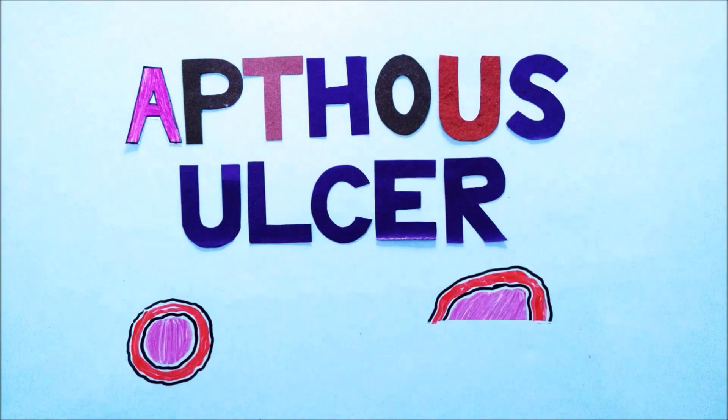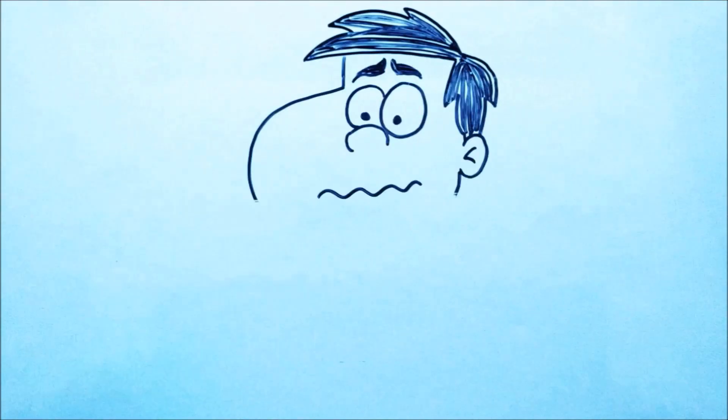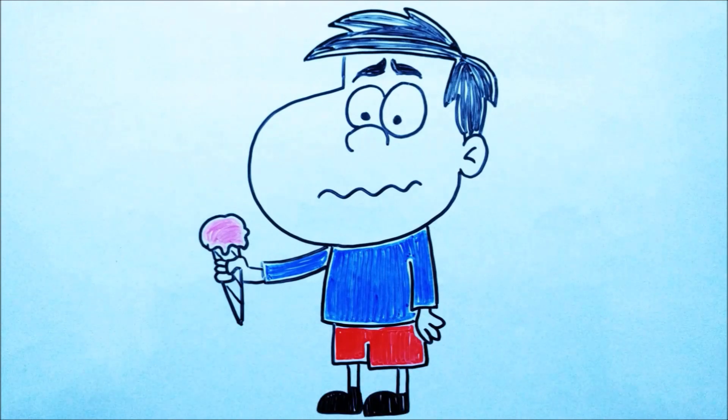Canker sores are also known as aphthous ulcers and they are generally round or oval in shape. These sores cause pain and burning sensation whenever you try to eat something.